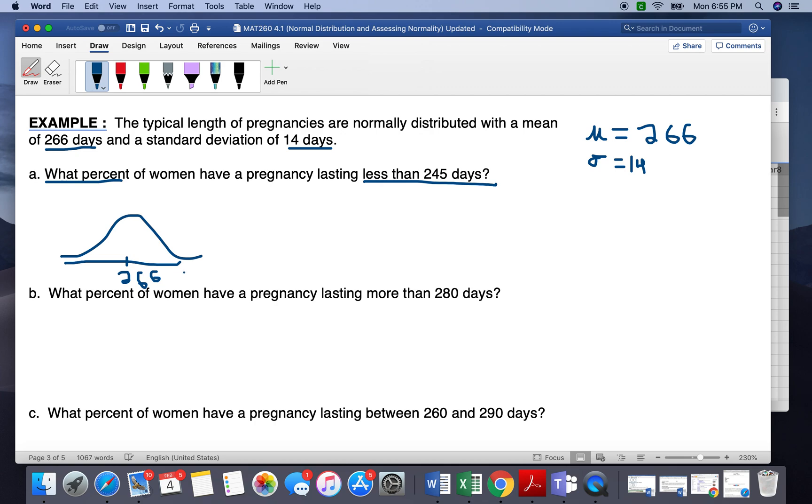And then we want to draw out where 245 will be. So 245 will be less than 266, so somewhere around here. And less than, we're going to shade to the left because it's less than.